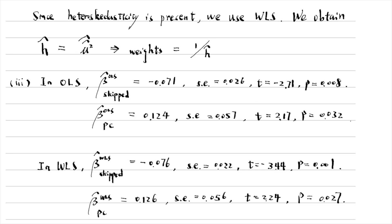The significance of the two variables is similar. Using both methods, the effect of skipping lectures is statistically significant at the 1% level, and the effect of having a PC is statistically significant at the 5% level.